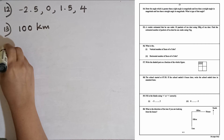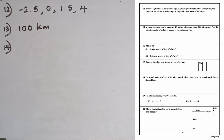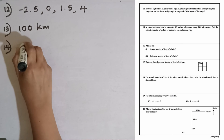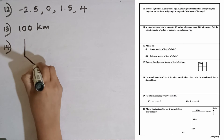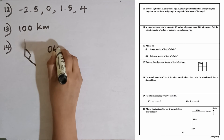Question number fourteen: draw the angle which is greater than a right angle in magnitude but less than a straight angle in magnitude. What is the type of this angle? The angle between a right angle and a straight angle — the name is an obtuse angle. This is the type.